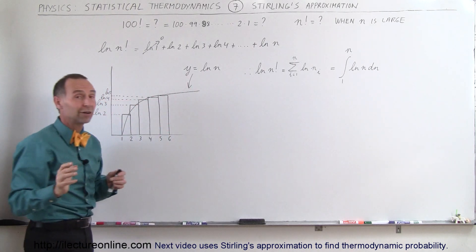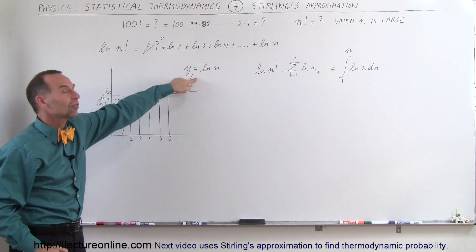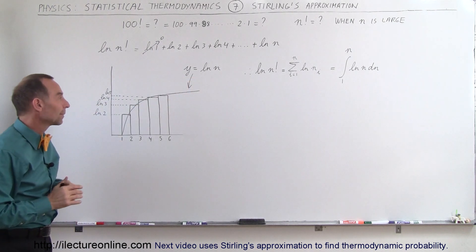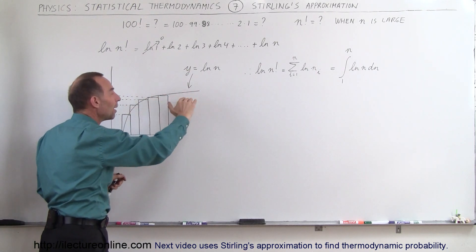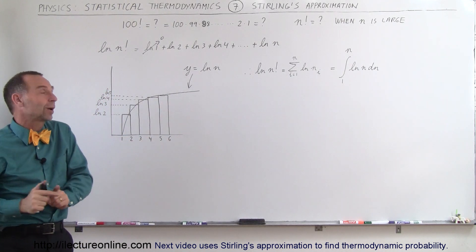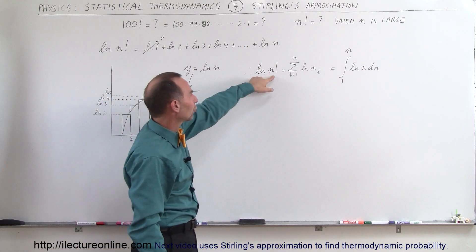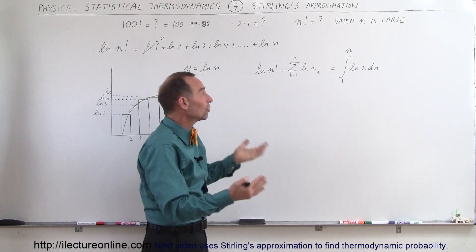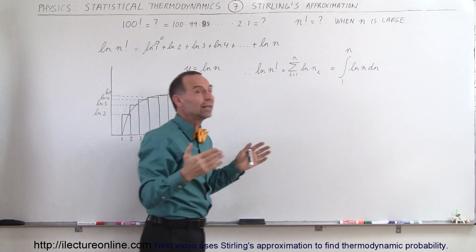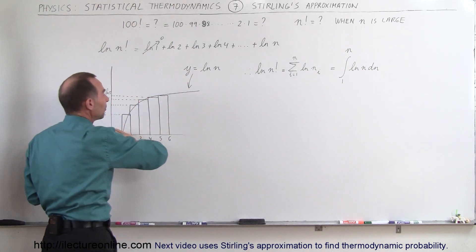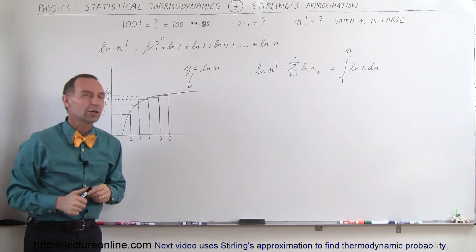As n becomes very large, the slope will be very, very close to 0. We can then assume that if we find the equation of this line, it becomes y equals the natural log of n. So we can say that these quantities, representing the areas of these rectangles, if we sum them all up, the sum of those rectangle areas will equal the natural log of n factorial — which means it's equal to the integral of the natural log of n from 1 to n, because that represents the area underneath this curve. If we make n big enough, the area under this curve will become essentially equal to the natural log of n factorial.